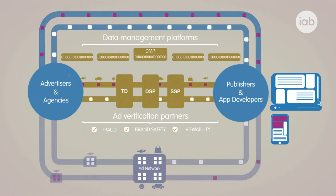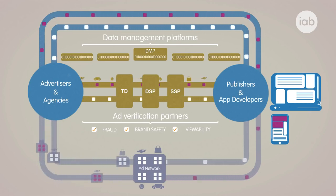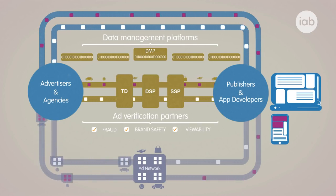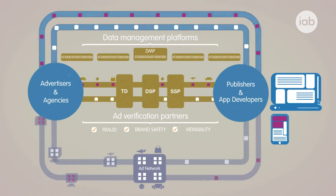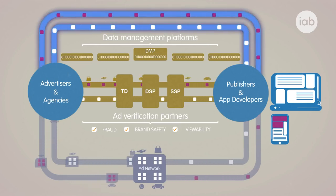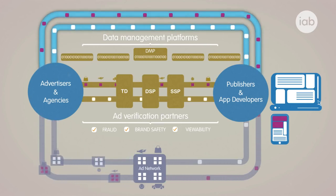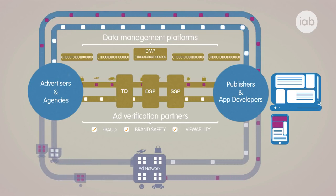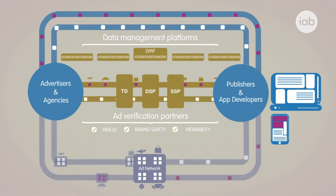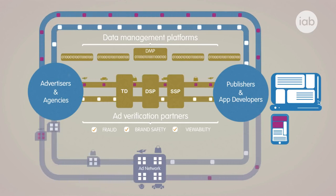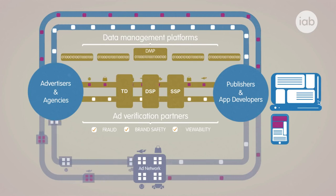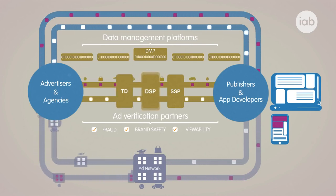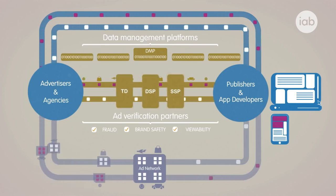We now find ourselves in an ecosystem where the majority of ad impressions are transacted through some degree of automation, including even the oldest model of the direct relationship between buyer and seller. None of this would have been possible without the increasing wealth of data now available to marketers and the specialization of every intermediary partner in the supply chain.